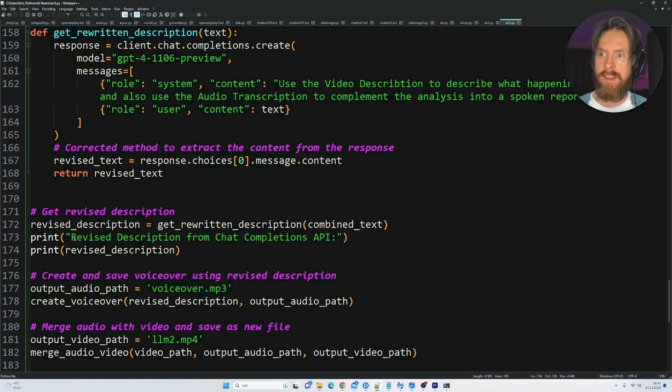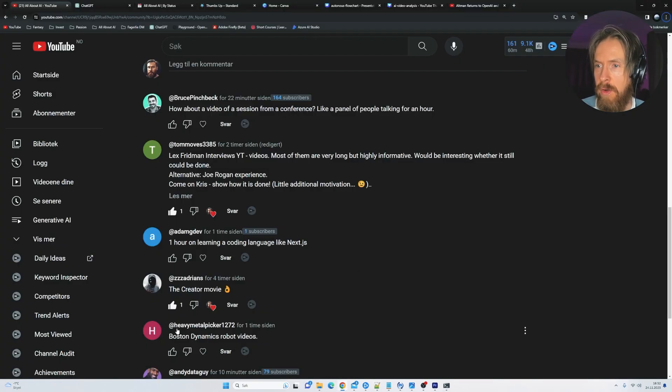Other than that it's pretty much the same but we end up with a revised description instead of just from the frames. That's it for the code. If you want to try this out for yourself you can support me by going to the link in the description below and become a member. I'll invite you to a GitHub where you can download all these scripts. So here we have some different ideas. Heavy Metal Picker wanted to have a Boston Dynamics robot video.